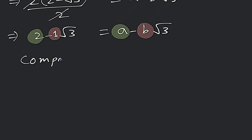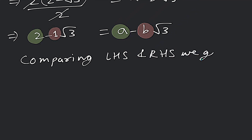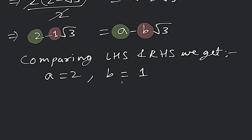Comparing left-hand side and right-hand side, what do we get? A is equal to 2. And for b — if both signs are minus here, and we have a minus b√3 on the right-hand side, then b equals 1. We can think of it as minus b equals minus 1, so b equals 1.